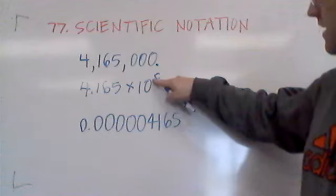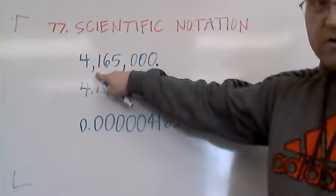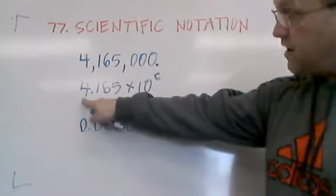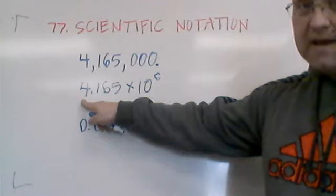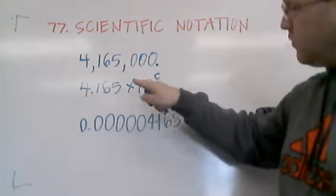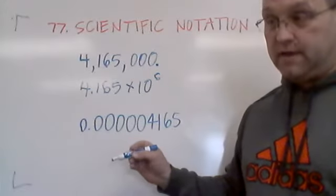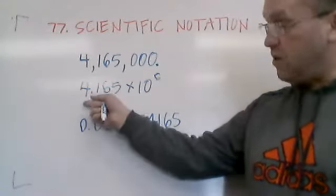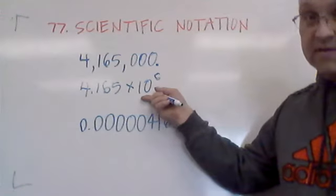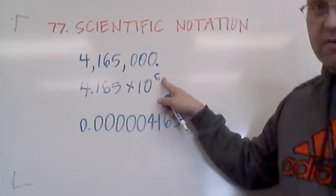So note, if we are making the number smaller, the original number is 4 million, the new number is 4.165. So how do we make it an equivalent expression? We have to make the exponent of 10 larger. So we've made the integer, the actual number, smaller. We compensate by making the scientific part, the power of 10, higher, a bigger number.